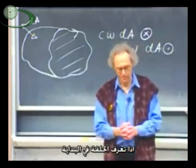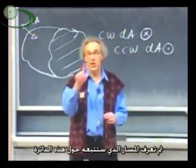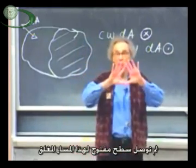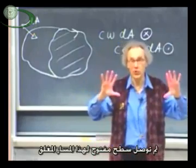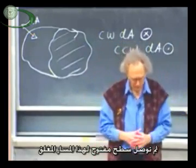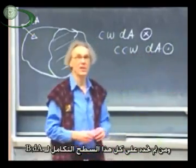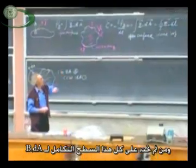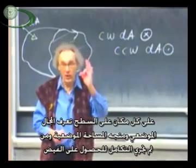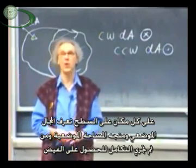You define the loop first. Then you define the direction in which you want to march around that circuit. You attach an open surface to that closed loop. And you can determine on that entire surface the integral of B dot dA. Everywhere on that surface, locally you know the dA, locally you know the B — you do the integration and you get the magnetic flux.